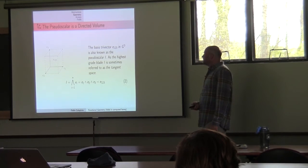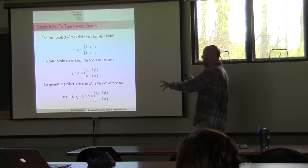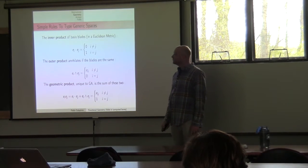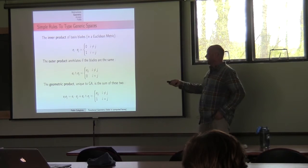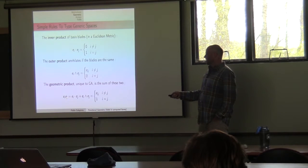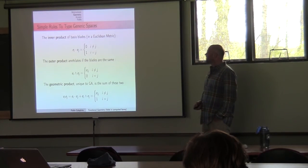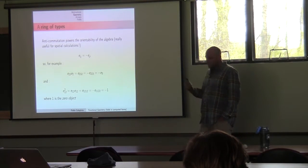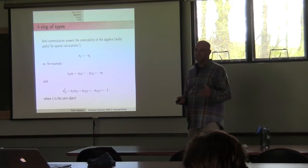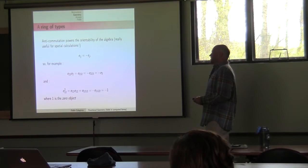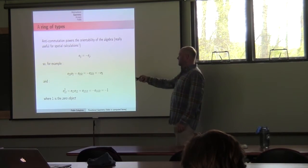There are basic rules for how these things combine — these are things worked out at the compiler level. Some combinations reduce to a zero object; others increase in grade. There's a product that combines both. These are type computations. Officially, the types form a ring: they can be added together and multiplied together. At least one operation forms a group — multiply one by the other and they'll eventually reduce to one of the other types.